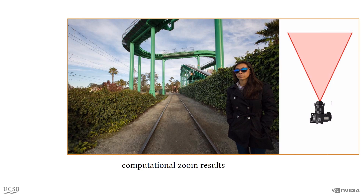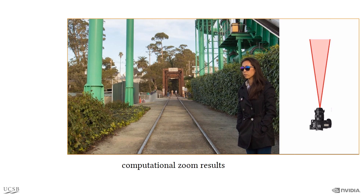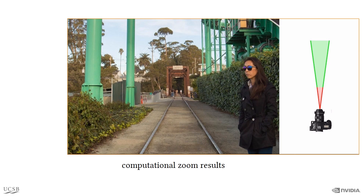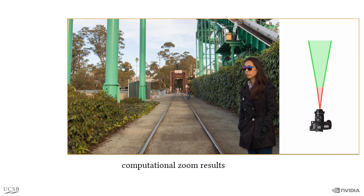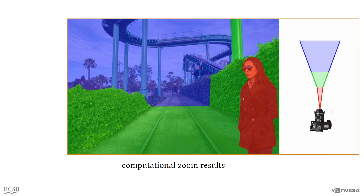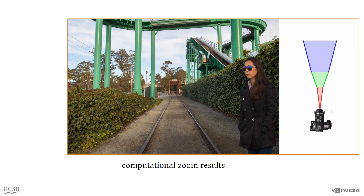We show an example of the type of post-capture control our method offers. The visualization on the right represents the projection mapping used to synthesize the image. Starting with this image, we first synthesized images that would remove the perspective distortion on the foreground object while keeping its size fixed. This, however, crops the background. We can rectify this by synthesizing multi-perspective images where the foreground is imaged using long focal length and the background using a short focal length to capture as much background as possible. We could further manipulate the image where the composition of the foreground is fixed and the background is pulled closer. Our framework enables the synthesis of images where rays of light could bend in the scene, allowing new image compositions that are plausible but not possible to capture using a physical camera.